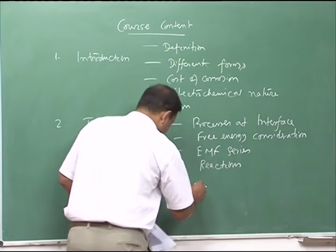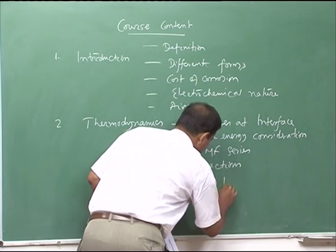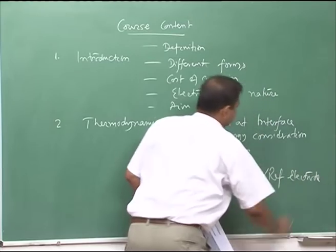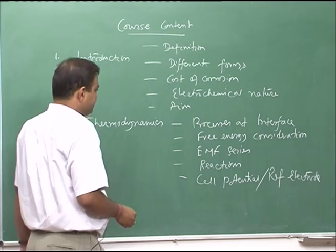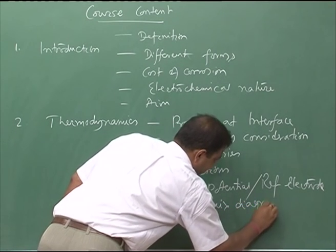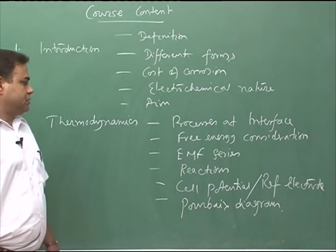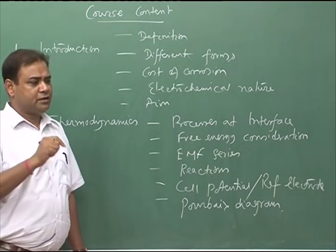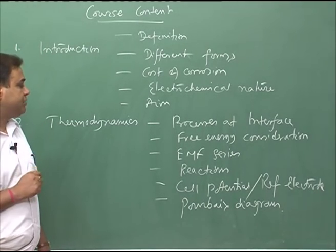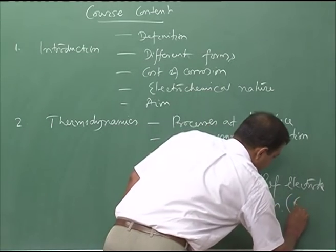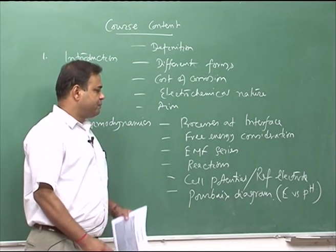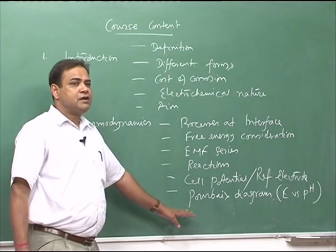Then we would see the reference electrode and cell potential. We would also try to see the Pourbaix diagram — to see that at a particular pH level and potential level, what phases would form on the surface of the metal in contact with the environment. This is the E versus pH diagram, the potential versus pH diagram, and this is mainly considered in the case of aqueous corrosion.